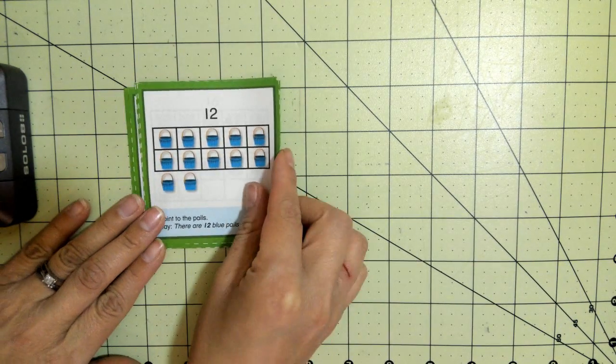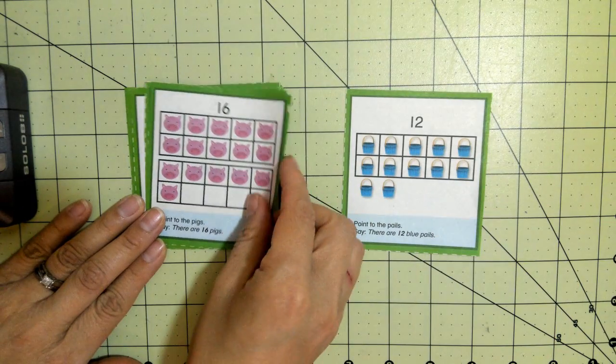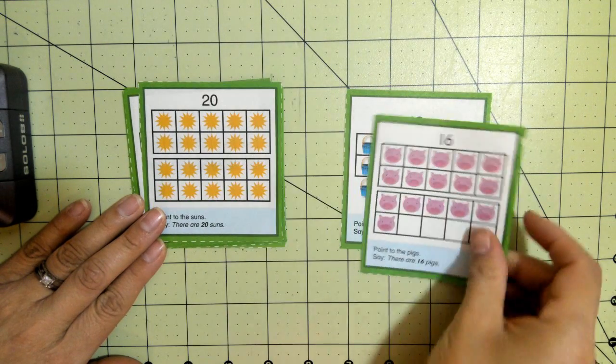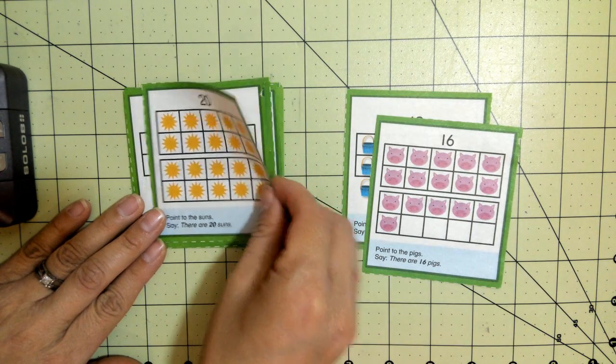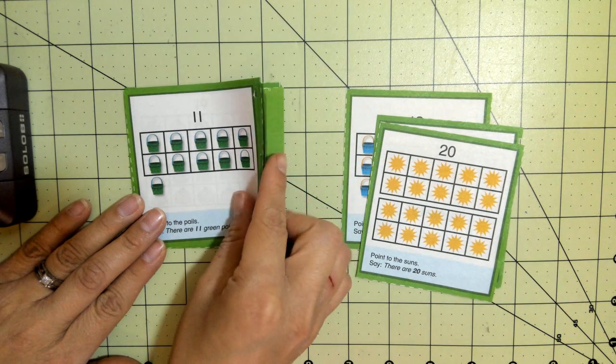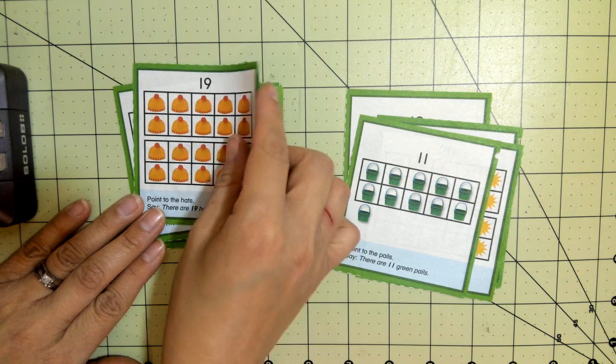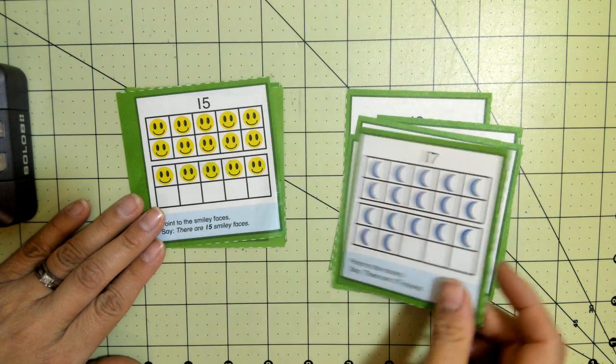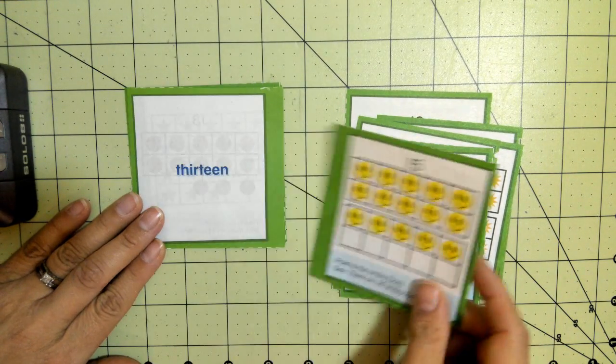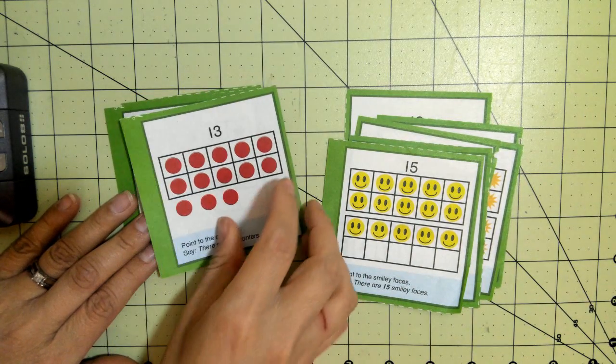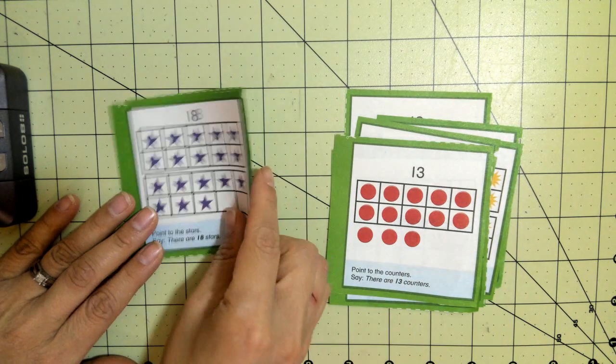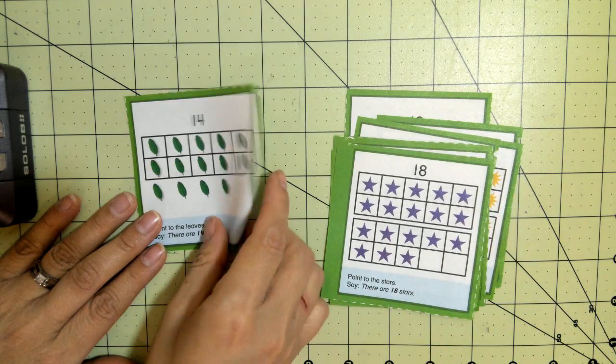Okay, so we have 12, 16, 20, 11, 19, 17, 15, 13, 18, 14.